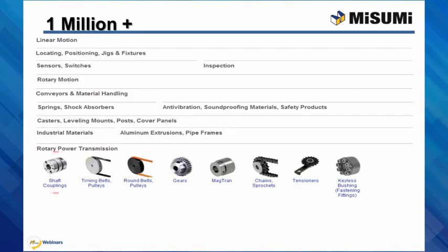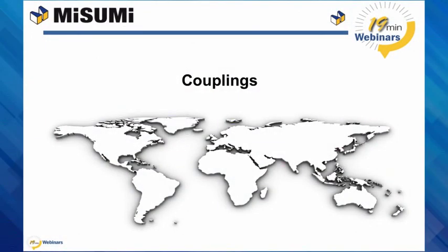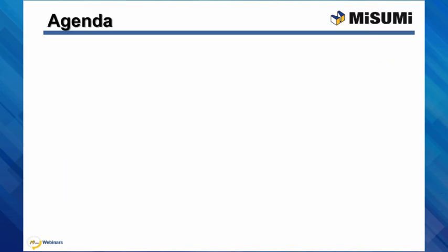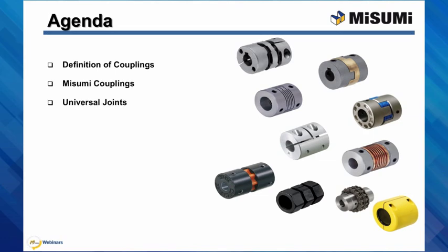Now I'll turn it over to our Misumi engineer. My name is Gordana Dahl and I'm a product engineer for Misumi's Standard Mechanical Components team. In today's webinar, I will talk about couplings. We will cover what couplings are, what couplings Misumi offers, including the special type of couplings called universal joints. I will also go over a few real-life examples using couplings, and at the end I will show you how to find, select, and download a 3D model for shaft couplings.